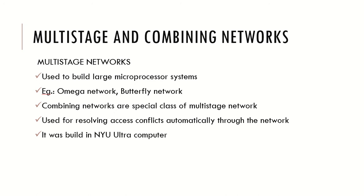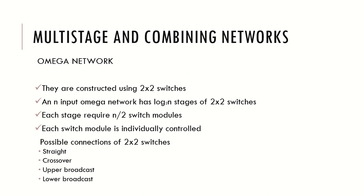Both multi-port memory and crossbar network are single-stage networks, each with their own advantages and disadvantages. Multi-stage networks are next: there will be multiple stages, each stage being a single-stage network, cascaded together to form the multi-stage network. It is used to build large multiprocessor systems. Examples are omega network and butterfly network. Combining networks are a special class of multi-stage networks used to resolve access conflicts automatically within the network — first invented at NYU for the ultracomputer.